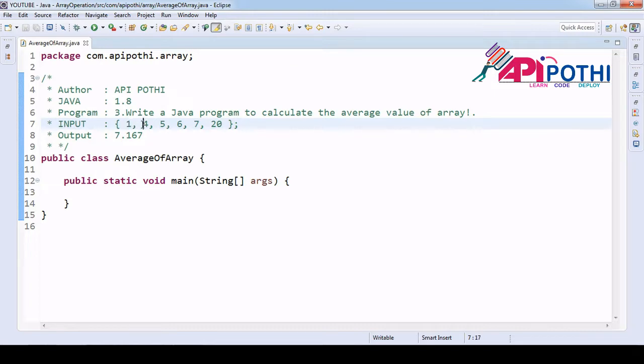1, 2, 3, 4, 5, 6. So we need to divide by 6. If you divide by 6, you will get the average. Basically, the average formula is this one. Let's create an integer array.